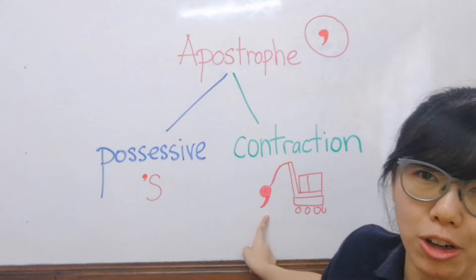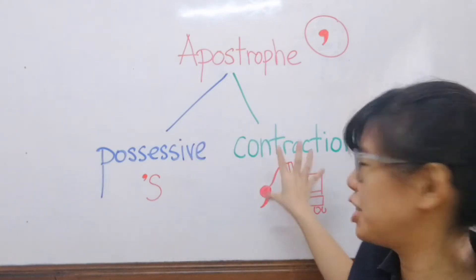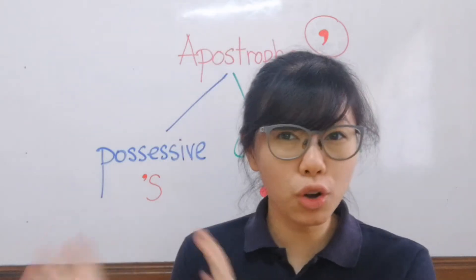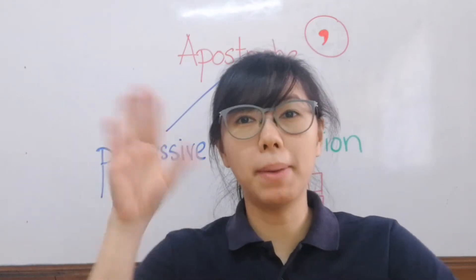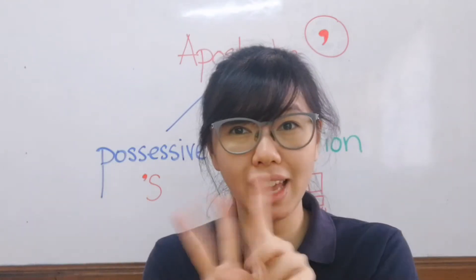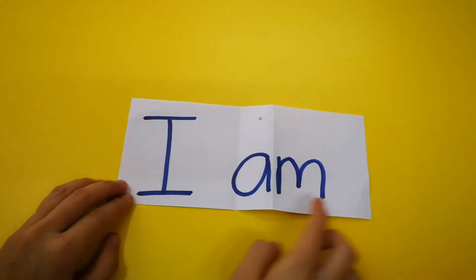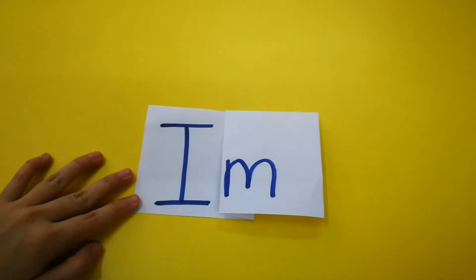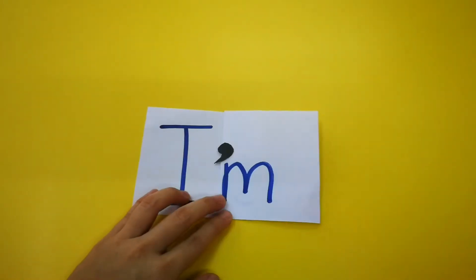Can you see the apostrophe here? It has become actually like a destroying machine. This is because it will destroy — or bash away — some letters to combine two words into one. For example, 'I am' can be shortened into 'I'm'. Make sure you put an apostrophe in between.